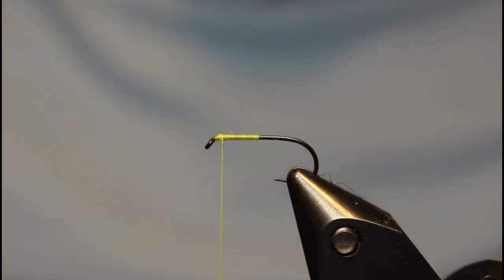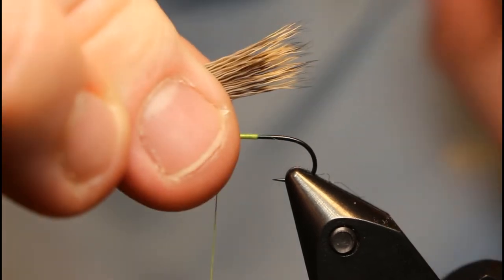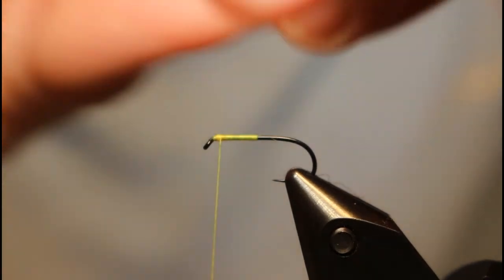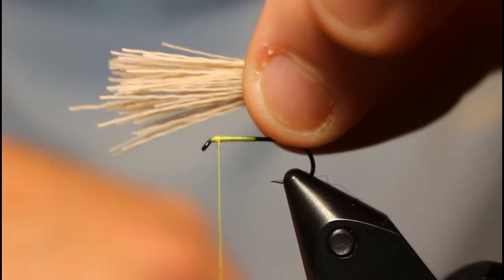So once you have that measurement, transfer those fibers back to your left hand, and you're going to want to take that measurement and keep that. That measurement is going to be at the edge of your index finger here.